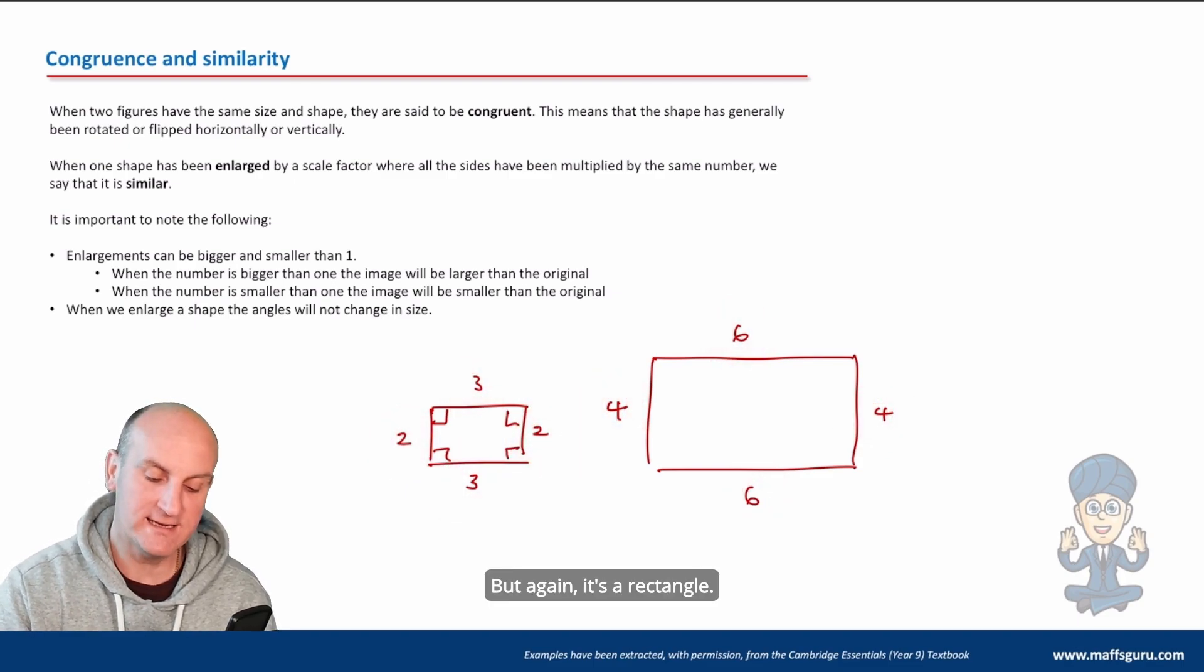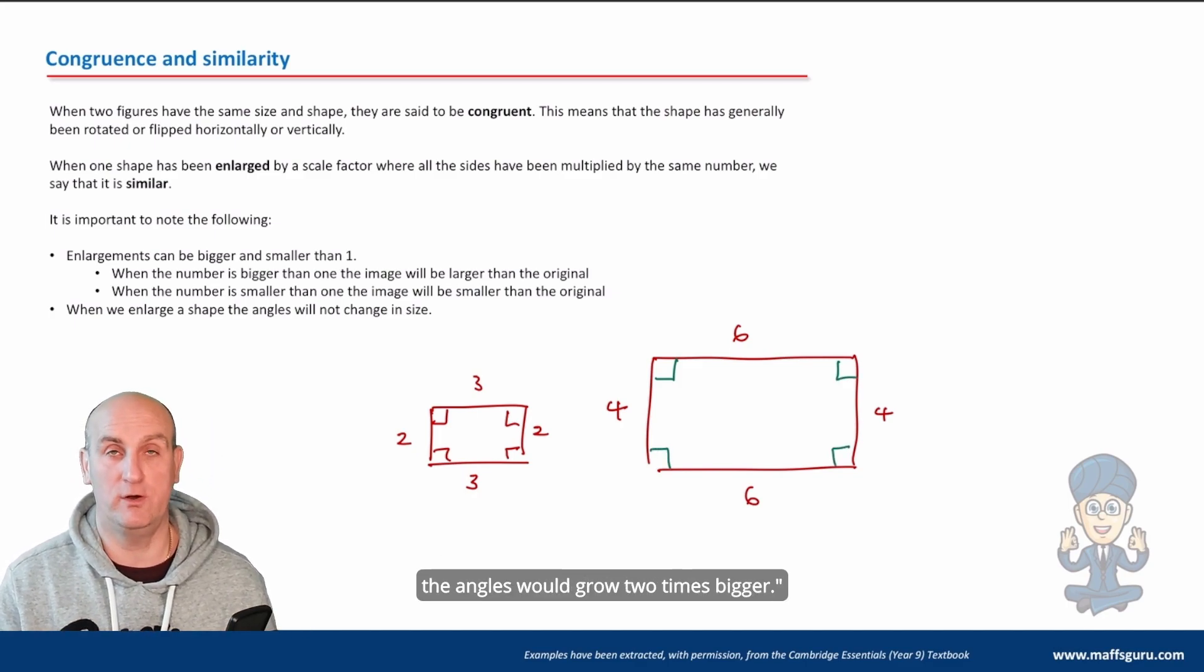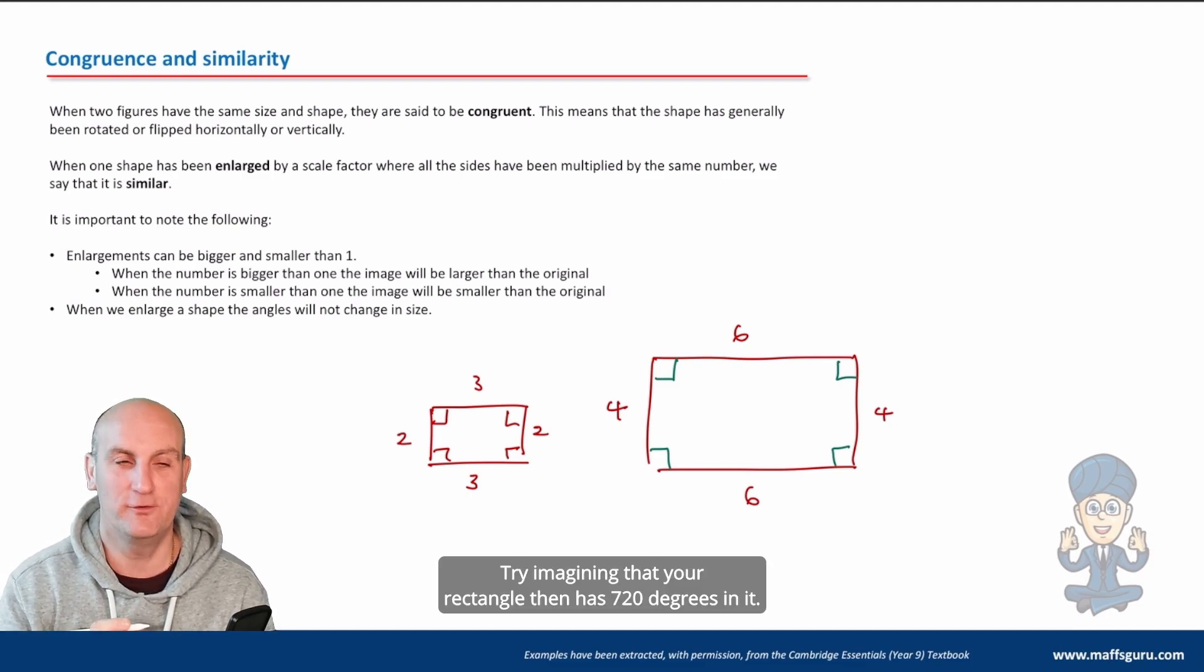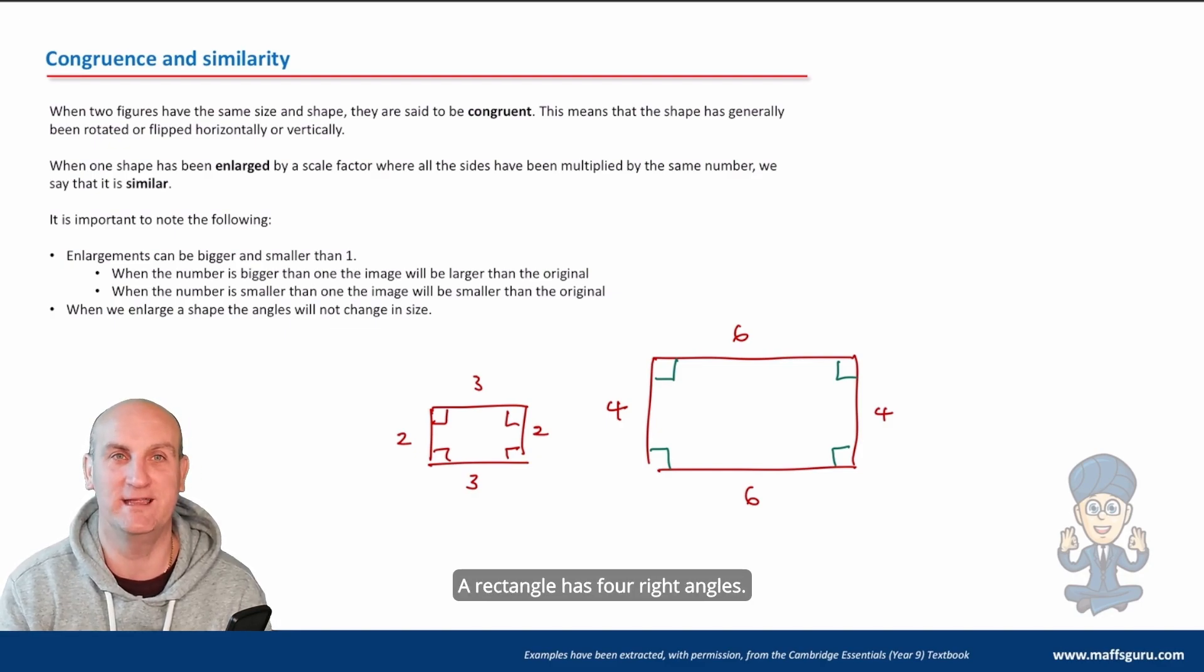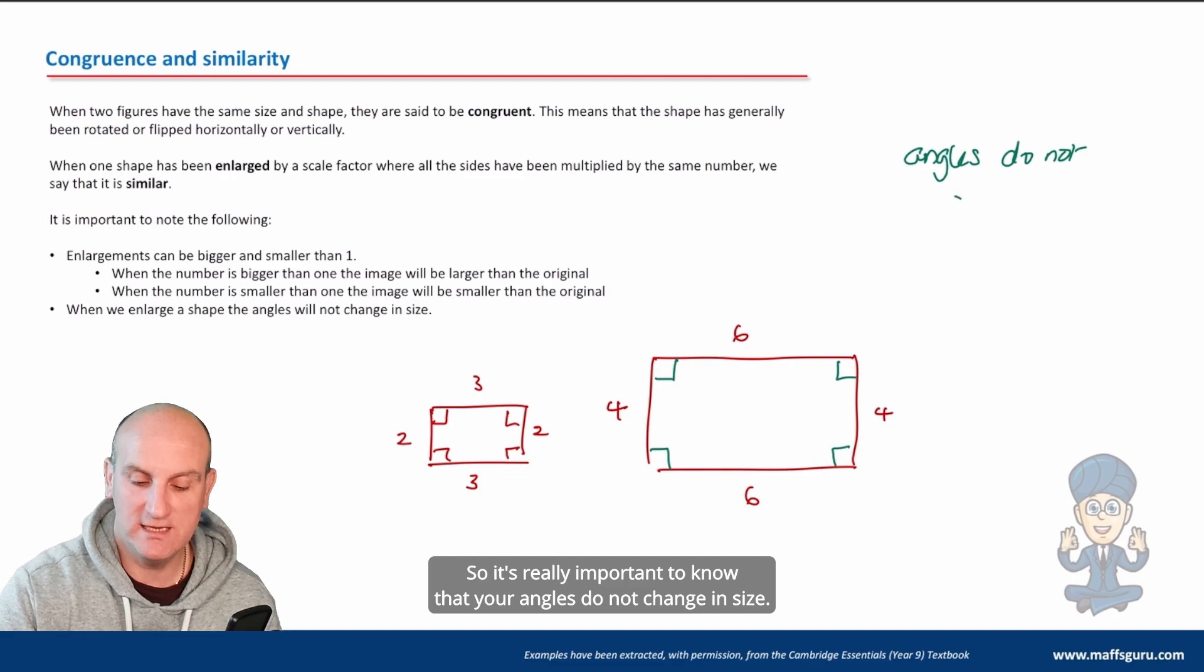I have enlarged every single side by two: two times two is four, three times two is six, two times two is four, three times two is six. But it's a rectangle, and a lot of people get very tricked by this. They think if I've made a shape two times bigger, the angles would grow two times bigger. It can't. Please don't. Try imagining that your rectangle then has 720 degrees in it. It's not possible.